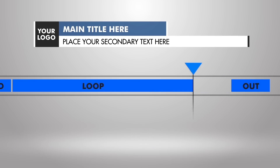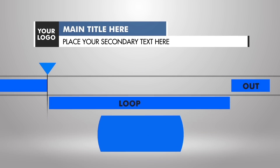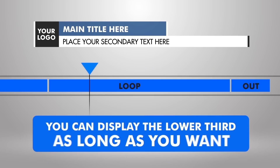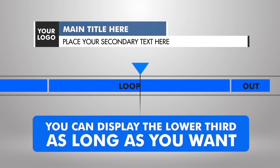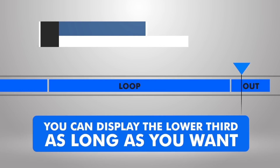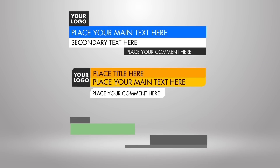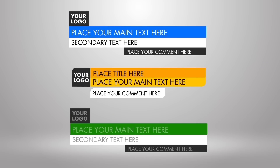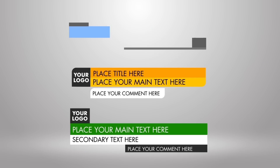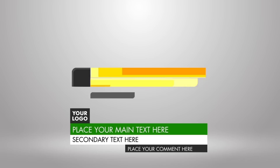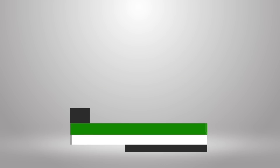Simply by playing this middle part more than once, you can display the lower third on your video for as long as you want. As you can see, each lower third begins with an animation that grabs the viewer's attention and ends by smoothly disappearing from the screen.